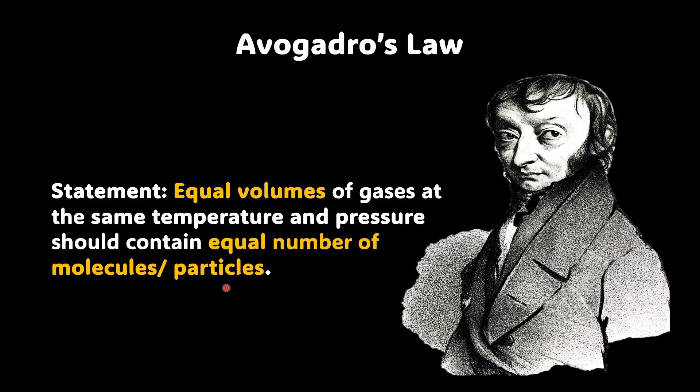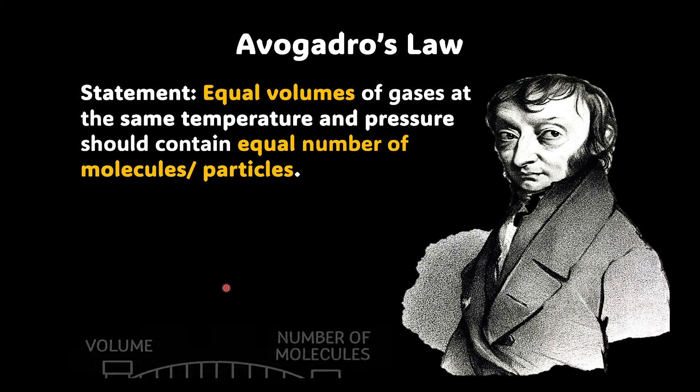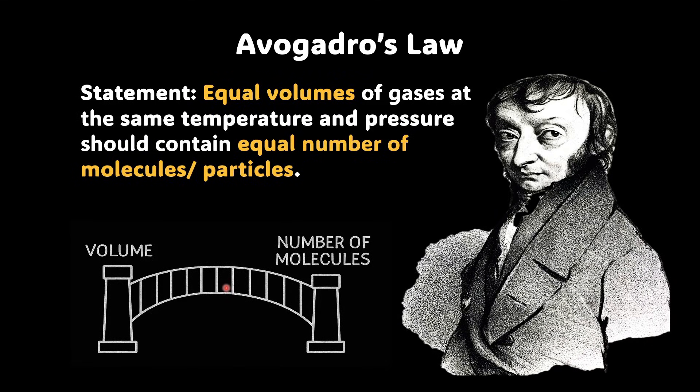But this one line explained all of Gay-Lussac's mysterious volume ratios. It provided a bridge between what we observe, that is volume, and what actually exists, that is number of molecules. So, if I have to write this mathematically, I can simply say volume is directly proportional to number of molecules, where the small n signifies the number of molecules or number of particles.